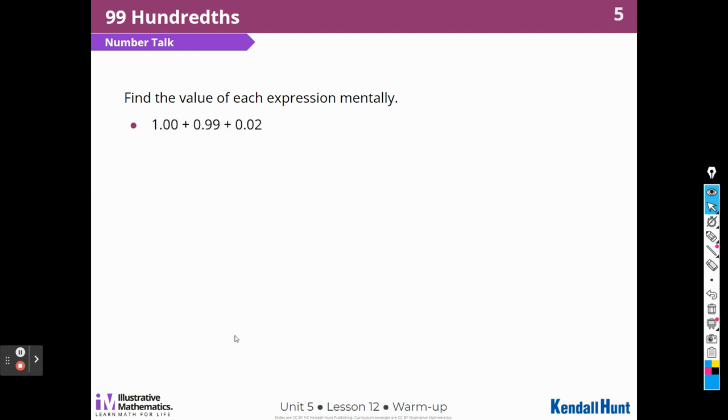Find the value of each expression mentally. 1 plus 0.99 plus 0.02. Well, if I think about this, if I add one of these two hundredths to the 99 hundredths, that's going to make this a 1. So 1 plus 1 is 2, and I'll have one hundredth left over. That's how I thought about it. I wonder how you thought about it.